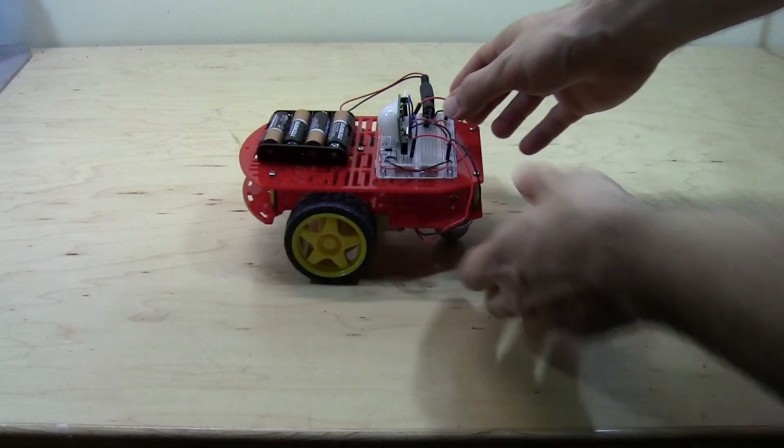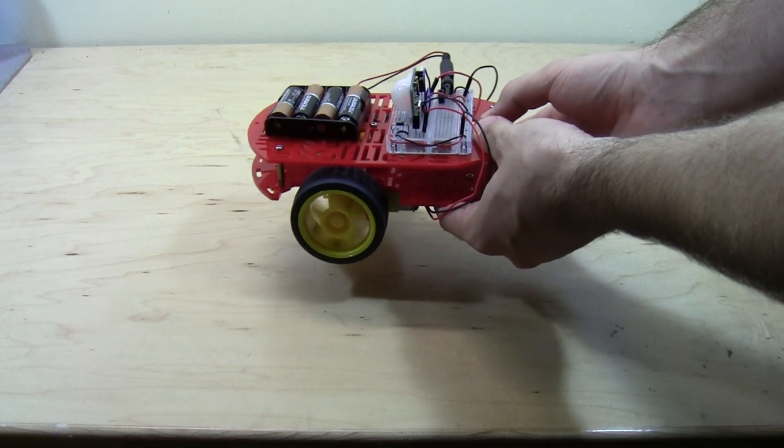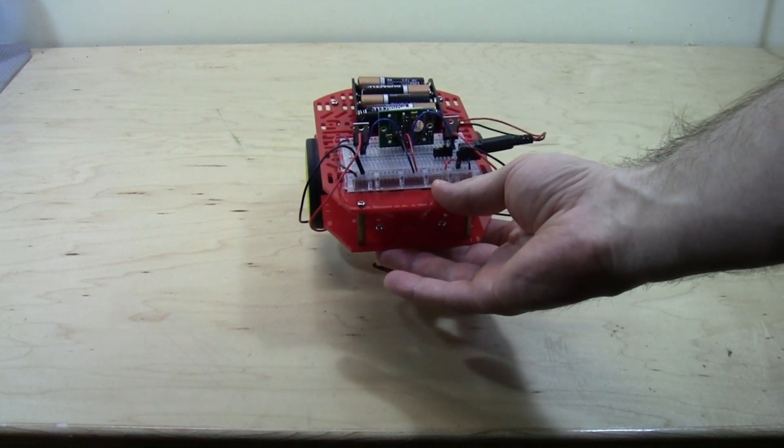Here you can see what happens when I first turn the robot on. The motion sensor needs to calibrate to its environment so it temporarily activates causing the wheels to spin. Once it is done calibrating, it will turn off and the wheels will stop.